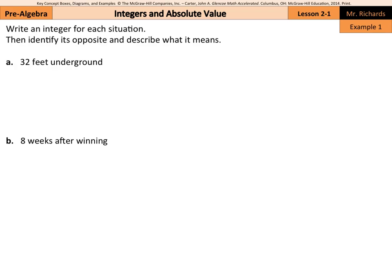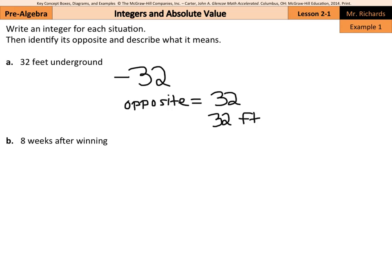For 32 feet underground — we're underground, so this is smaller than zero if zero is ground level. We can say that an integer for this situation is negative 32. The opposite of negative 32 would be positive 32, and this would mean 32 feet above ground.